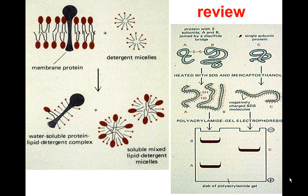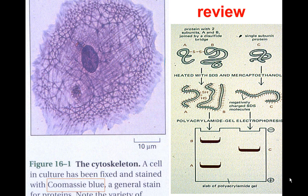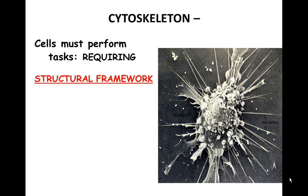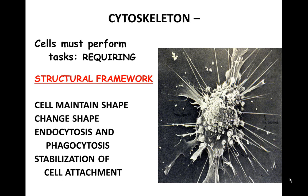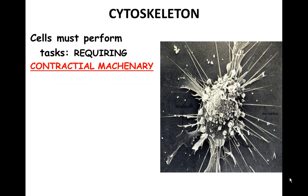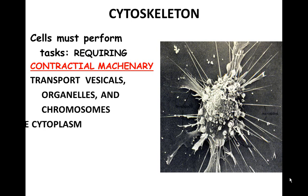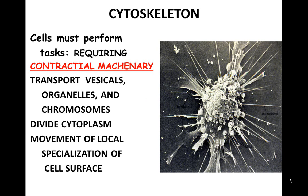When we looked at the gel proteins using Coomassie blue, we could see the railroad tracks or the network within the cell. The cytoskeleton provides tasks requiring structural support to maintain or change cell shape, endocytosis, phagocytosis, and stabilization and attachment. It also provides contractile machinery to transport vesicles, chromosomes, divide the cytoplasm, move local specializations of the cell surface, and enable cell motility.